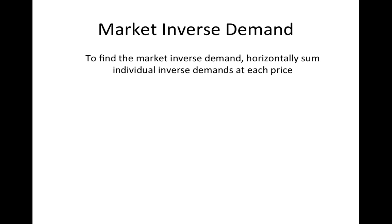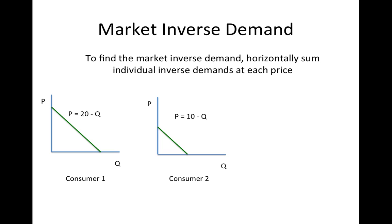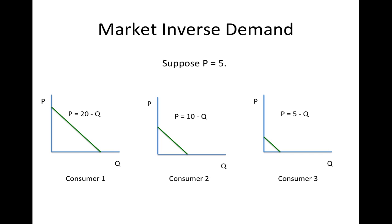For example, suppose that there are three consumers in a market. Consumer one has an inverse demand function equal to P equals 20 minus Q. Consumer two has an inverse demand function of P equals 10 minus Q. And consumer three has an inverse demand function of P equals 5 minus Q. Suppose that the price is 5. At a price of 5, consumer one's demand is 15, consumer two's demand is 5, and consumer three's demand is 0. Therefore, the total market demand at a price of 5 is 20 units. You would find other points on the market demand curve by substituting different prices into the inverse demand equation and solving for the quantities for each consumer and adding them up.